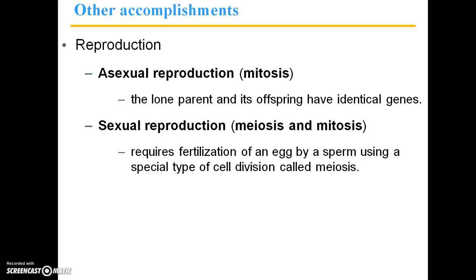Other accomplishments of cell division include asexual reproduction, which is the same process that our skin cells go through. Basically it's still mitosis, where you're just making a copy of a parent cell. The lone parent and its offspring have identical genes. And then sexual reproduction, which is accomplished by a different type of cell division called meiosis. Once meiosis has produced the sperm and egg cells and those sperm and egg cells fuse, mitosis occurs, which is just that cell division and growth.